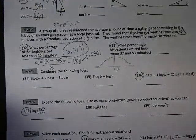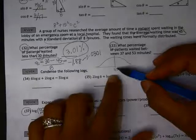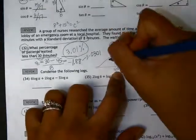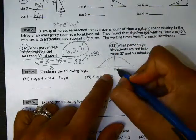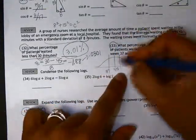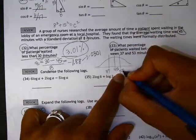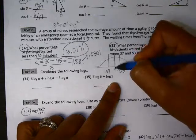On number 33, we're being asked what percentage of patients waited between 37 and 53 minutes. If we look at the normal distribution, since the standard deviation is 8, 45 minus 8 is 37, and 45 plus 8 is 53. So these values are exactly one standard deviation away from the mean.